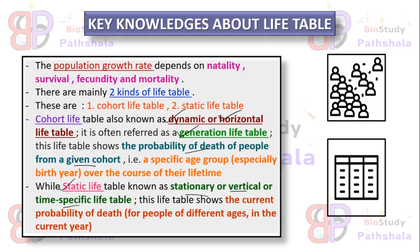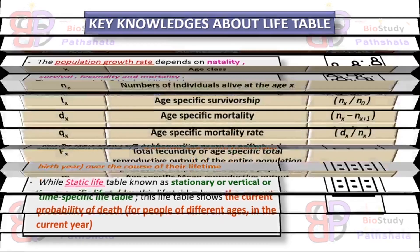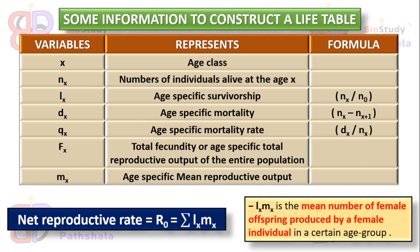To construct a life table we need some information based on certain variables. We will know what the variables are, their representations, their formulas, and what the conclusion or target is in constructing the life table. The variables are: x, nx, lx, dx, qx, fx, and mx.